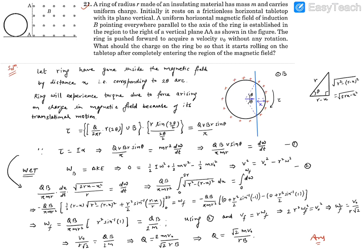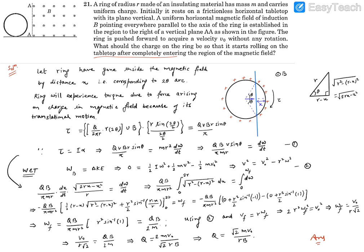Question number 21. It reads: a ring of radius R made of an insulating material has a mass M and carries uniform charge. Initially, it rests on a frictionless horizontal tabletop with its plane vertical. A uniform horizontal magnetic field of induction B, pointing everywhere parallel to the axis of the ring, is established in the region to the right of a vertical plane AA'. The ring is supposed to acquire a velocity V₀ without any rotation. What should be the charge on the ring so that it starts rolling on the tabletop after completely entering the region of the magnetic field?